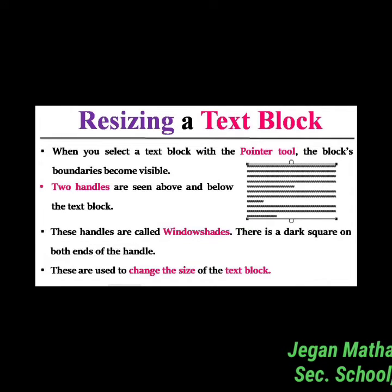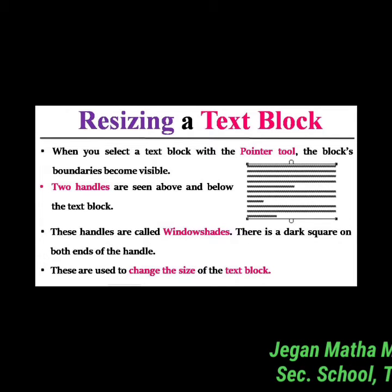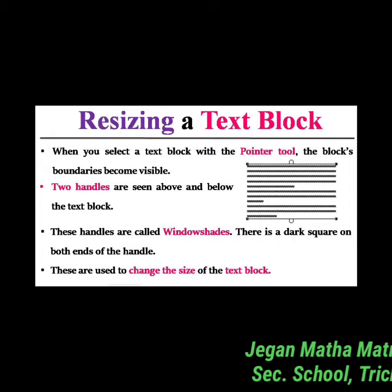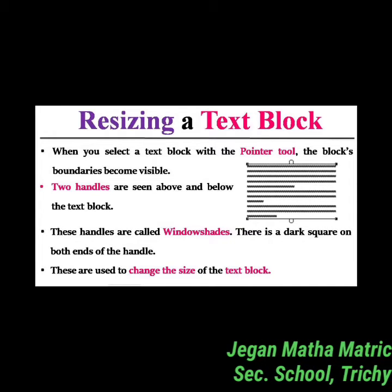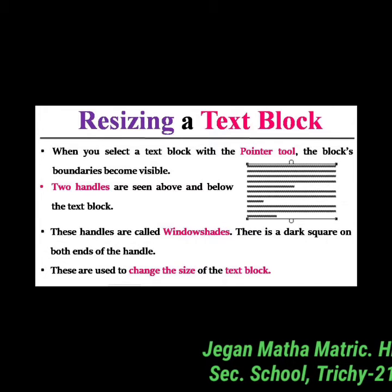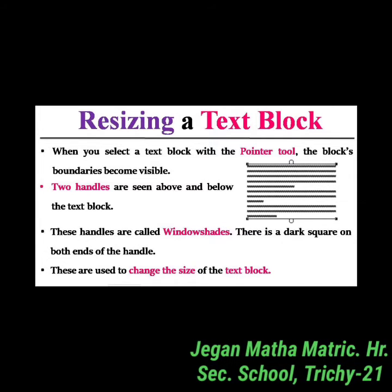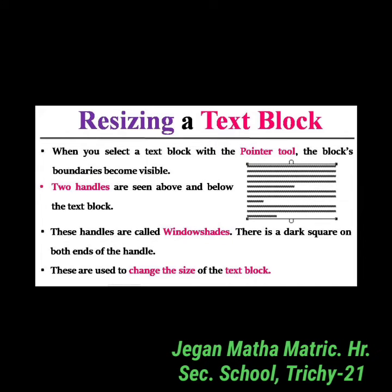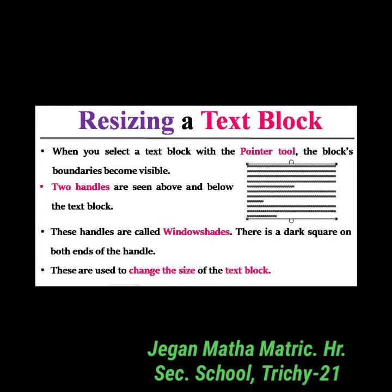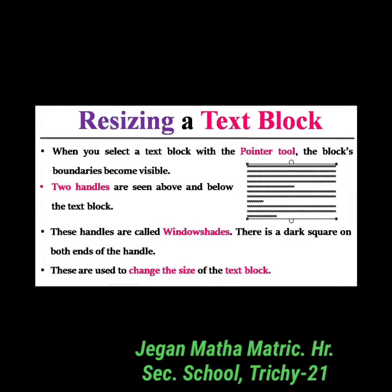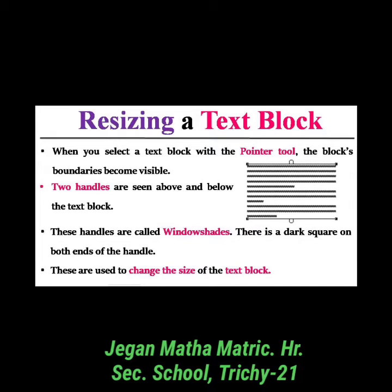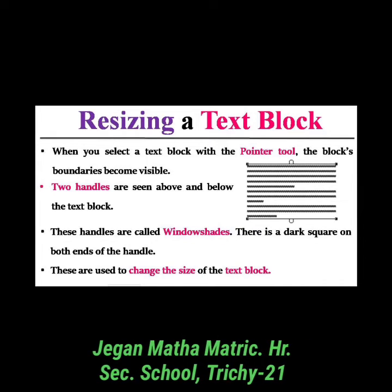Next is resizing a text block. When you select a text block with the pointer tool, the text block boundaries become visible. Here in the diagram, two handles are seen above and below the text — these are called window shades. There is a dark square on both ends of the handle, and these are used to change the size of the text block.